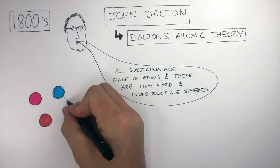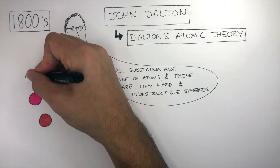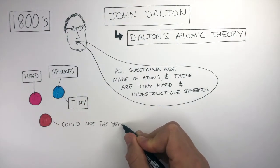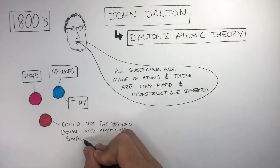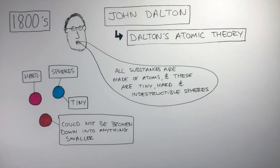In Dalton's atomic theory, he said atoms were tiny, hard spheres and could not be broken down into anything smaller. Dalton was right that they were tiny. However, he was wrong that they were hard, wrong that they were spherical, and wrong that they could not be broken down into anything smaller. As we know, atoms are made of neutrons, protons, and electrons.